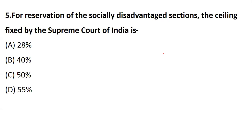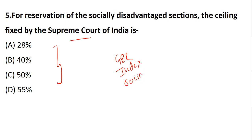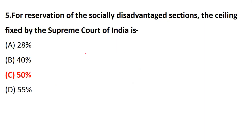Question five: for the reservation of socially disadvantaged sections, what is the ceiling fixed by the Supreme Court of India? This question appeared in a previous year's paper. Factual questions like this — on gross enrollment ratio, people's index with reference to education, or reservation ceilings — can appear in your examination. The ceiling fixed by the Supreme Court for reservation of socially disadvantaged sections is 50 percent.